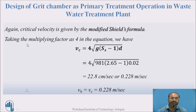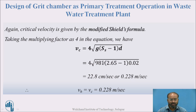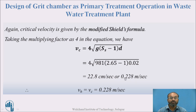Next, I check the critical velocity using Shields formula, taking the multiplying factor Kc as 4. Putting in the values: Vc = 4 × √(981 × (2.65 − 1) × 0.02), I get approximately 22.8 cm/s, or 0.228 m/s. This is the horizontal critical velocity.